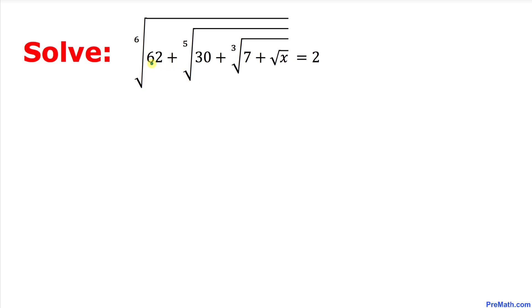This involves the sixth root of 62 and then the fifth root of 30 followed by the cube root of 7 and then followed by the square root of x equals to 2.